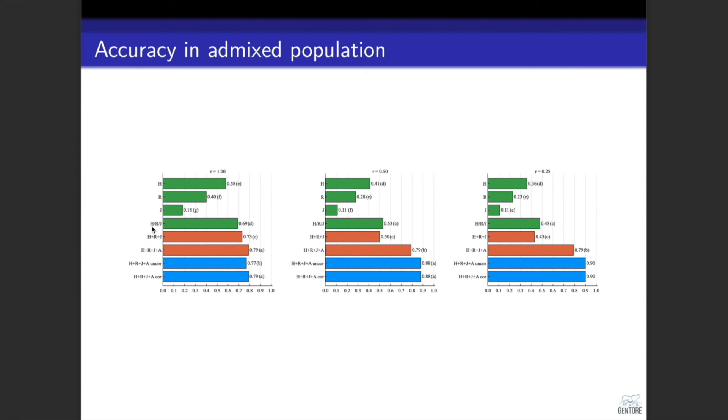When we estimated SNP effects separately within each pure breed but accounted for breed origin of alleles for admixed individuals, we get a reasonably high accuracy. But when we simply combine these three breeds, we have an improvement only when the QTL effects were identical. But it reduced the accuracy as the correlation of QTL effects reduced.